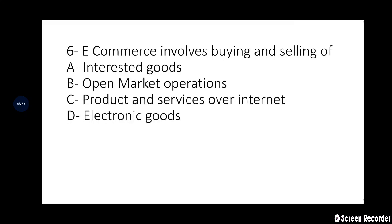Sixth question: E-commerce involves buying and selling of — A: Interested Goods, B: Open Market Operations, C: Products and Services over Internet, D: Electronic Goods. The right answer is option C — Products and Services over Internet. Buying and selling products online is called e-commerce. Examples include platforms like Amazon and Flipkart.